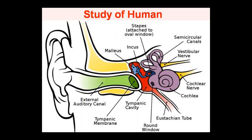The second main part is the tympanic membrane, which we call the ear drum. This tympanic membrane separates and divides the external ear from the middle ear. In the diagram, the tympanic membrane is shown in dark green color. On the outside you can see the ear pinna and the external auditory canal.